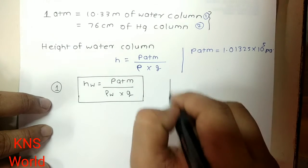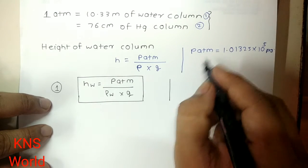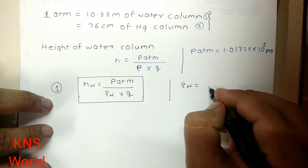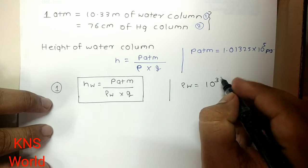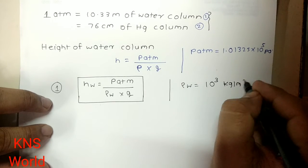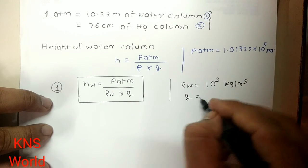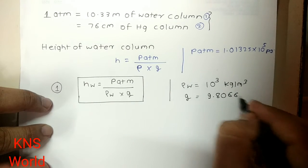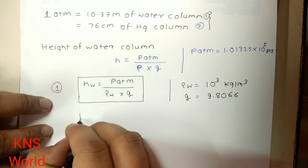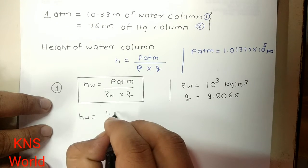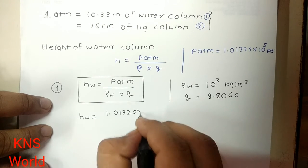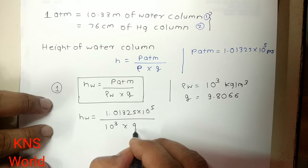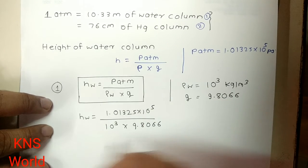For the first case we are using this formula, so we know this is the standard value. Density of water we know that is 10 raise to 3 kg per meter cube and g value is 9.8066. So if we put that H_w is equal to 1.01325 times 10 raise to 5 upon 10 raise to 3 into 9.8066.